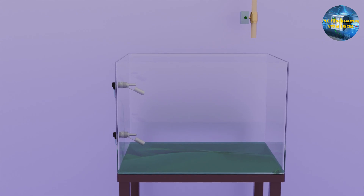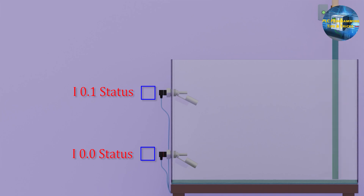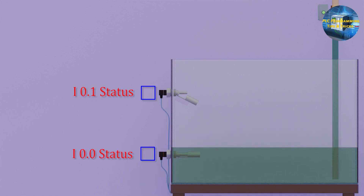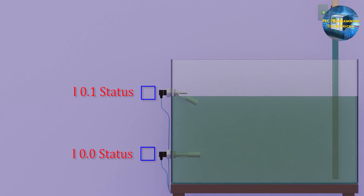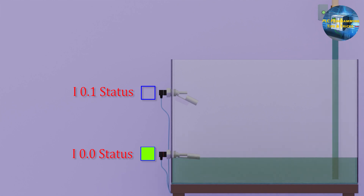First, let's see the setup for today's tutorial. We have a water tank with two level probes. The low level probe is connected at I0.0 input of the PLC, and the high level probe is connected at I0.1 input of the PLC. The water inlet valve is connected at Q0.0 output of the PLC. As the water touches the low level probe, it moves up and down a few times before stabilizing at the up position. The same happens when the water touches the high level probe.